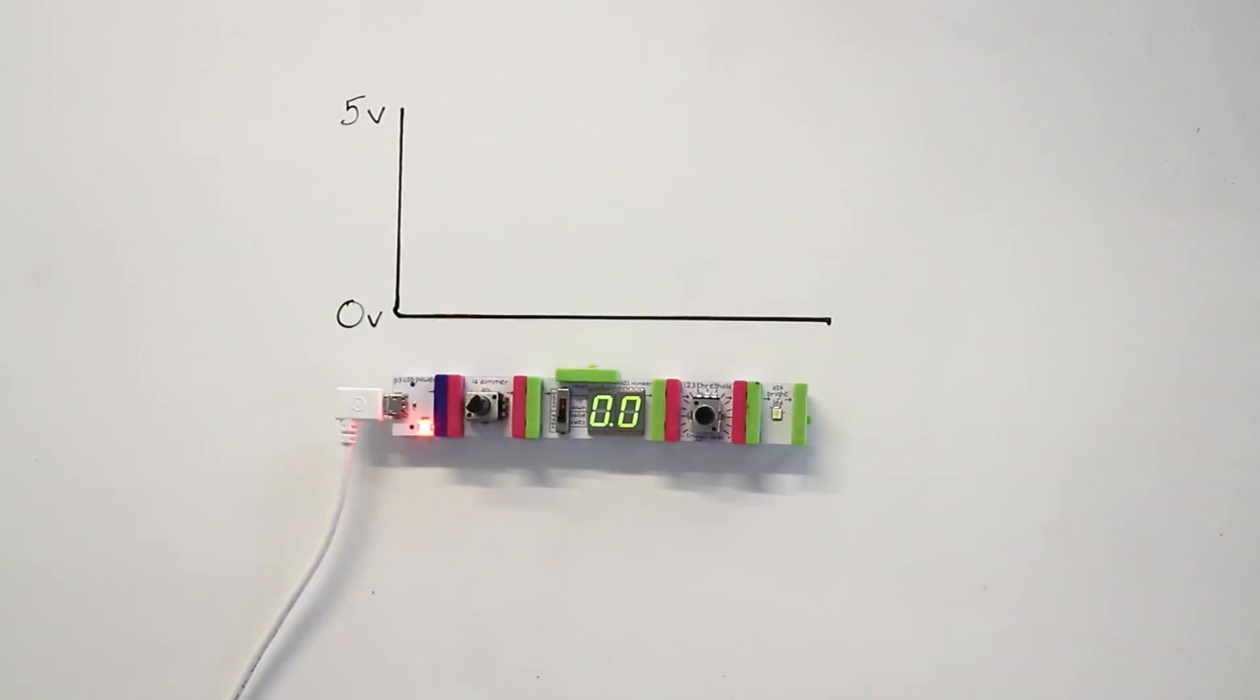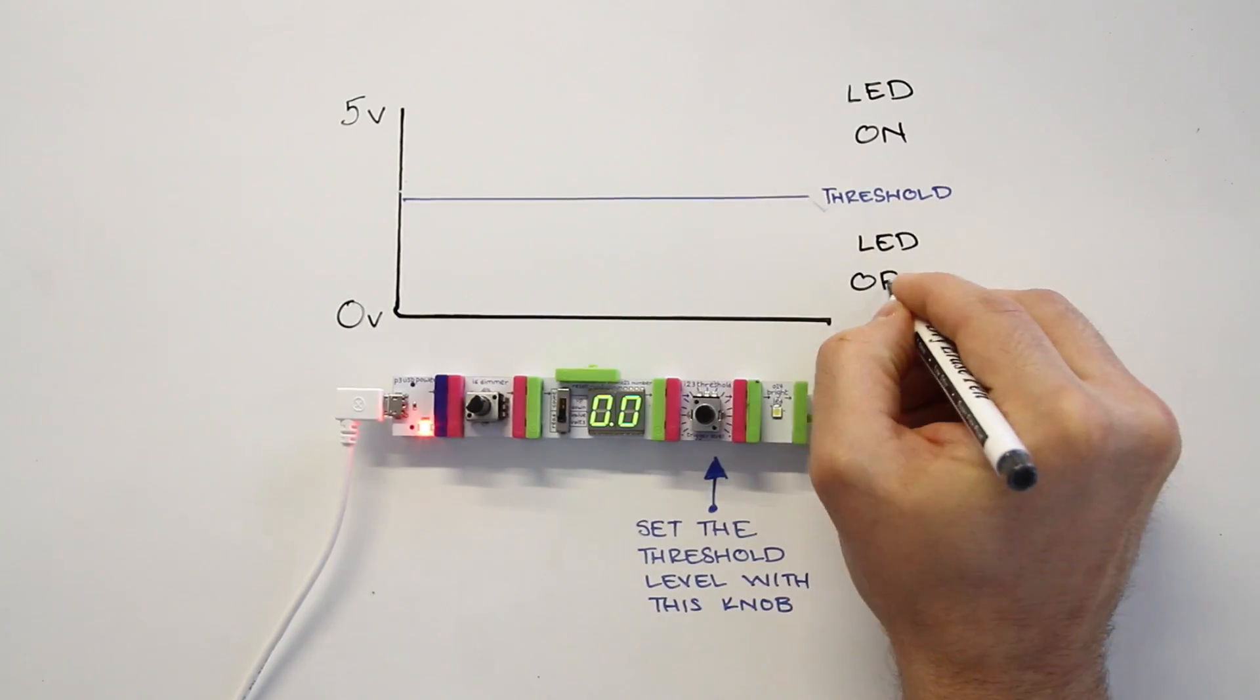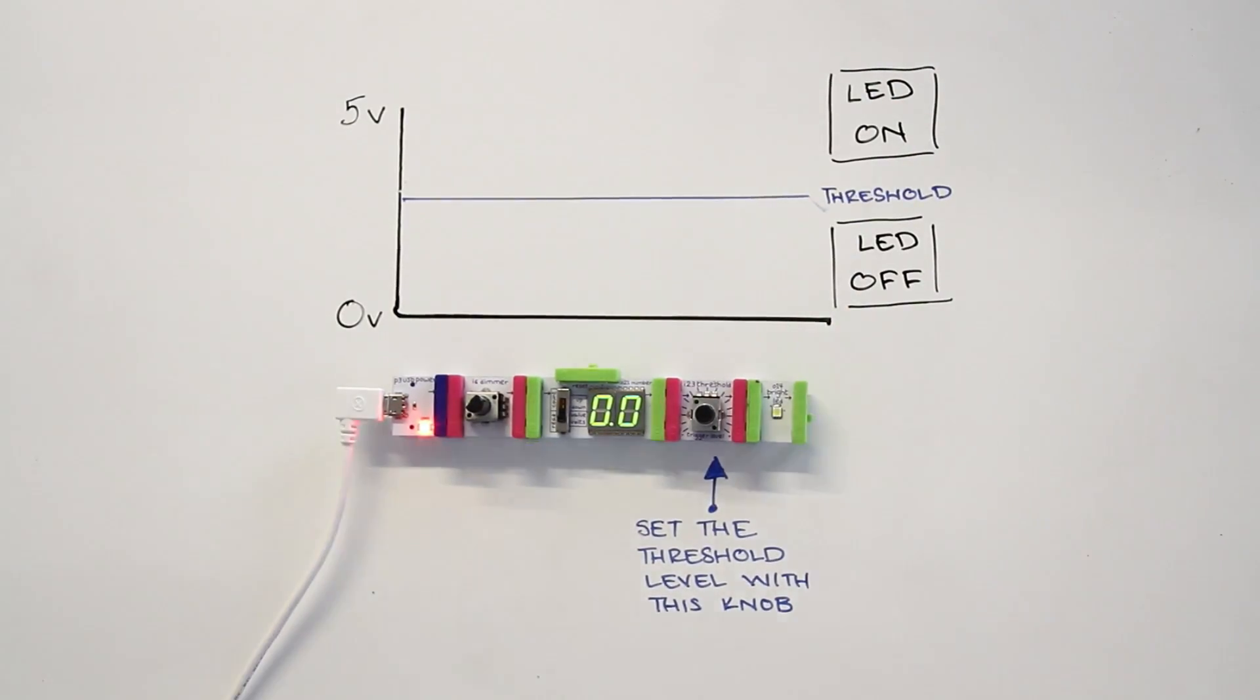Here's how the threshold works. You set the level or the threshold with the knob on the module. Any signal which falls below this level is going to result in an off signal going out of the module. Any signal which is above this level is going to result in an on signal leaving the module.